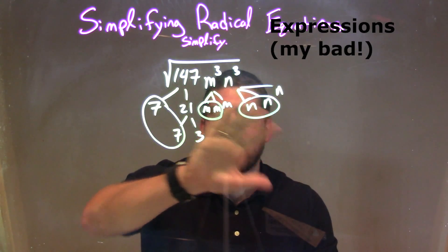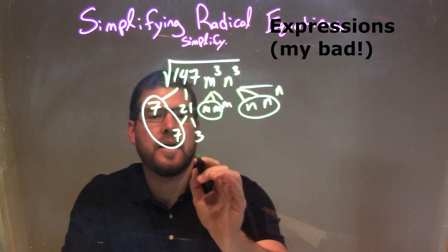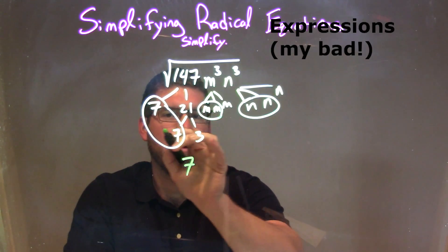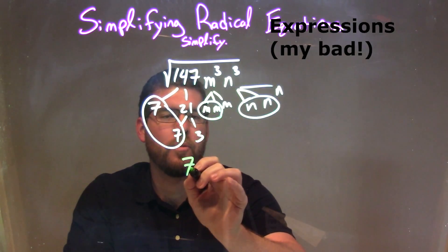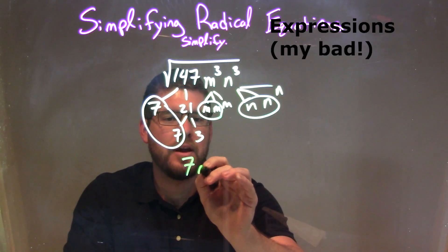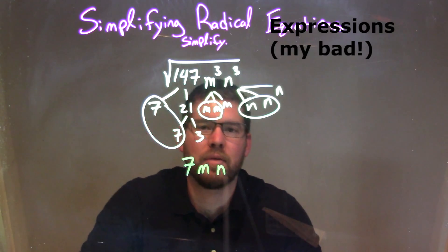So when I circle my pairs, from the outside here, outside of the square root, I have my 7 there. So I have a pair of 7, represented by one 7 right here, pair of ms represented by this 1m, and pair of ns by that n, right there.